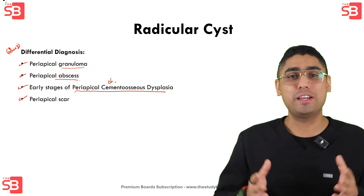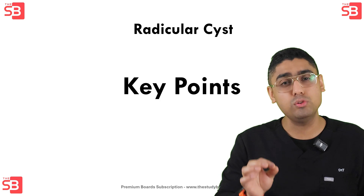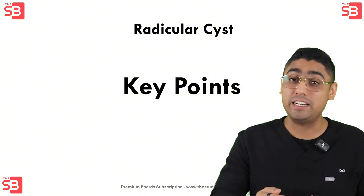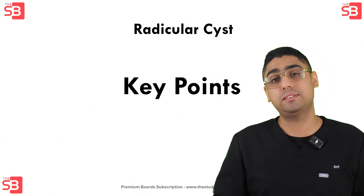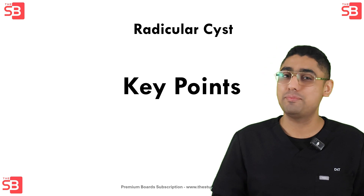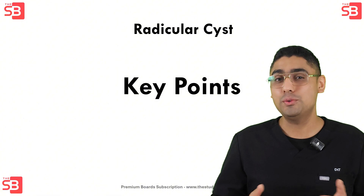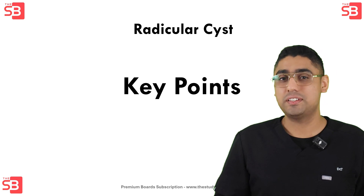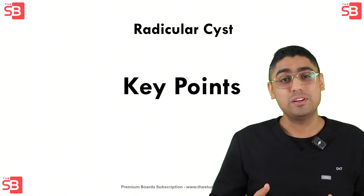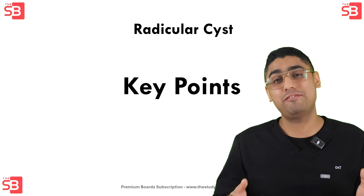Here is a summary of today's video on radicular cysts. We started by understanding that radicular cysts are one of the most common odontogenic cysts, typically forming around the apex of a non-vital tooth in response to chronic inflammation. They originate from epithelial cells called epithelial rests of Malassez, which are remnants of Hertwig's root sheath involved in tooth development. In terms of clinical features, radicular cysts are often asymptomatic; however, if they grow large enough, they may cause swelling, pain, and even mobility of the affected teeth.